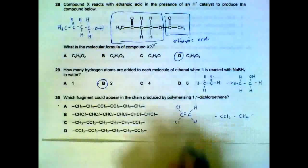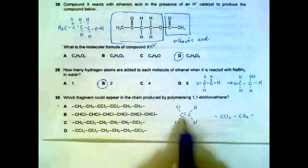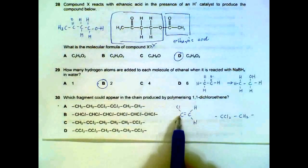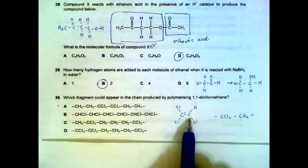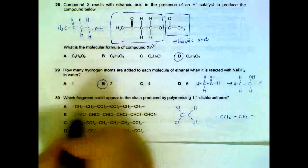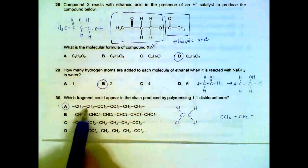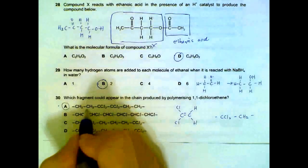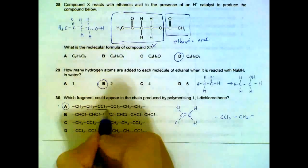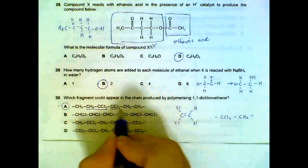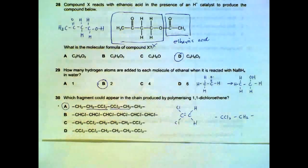Question 30. 1,1-dichloroethane, so we have 2 chlorines attached to the same carbon and 2 hydrogens attached to the next carbon. Which fragment will it be? The answer will be A. Although it doesn't seem like the monomer for the first 2 carbons, actually the repeating unit starts from the second carbon onwards, and then this is the repeating unit, and so on.